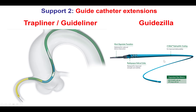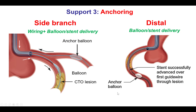The Guidezilla is another option for obtaining extra support. Occasionally, it is better to go with a small size guide catheter extension, such as 6 French, even if 8 French guides are used, to enable further deep intubation of the vessel with less chance of traumatic injury of the vessel wall.